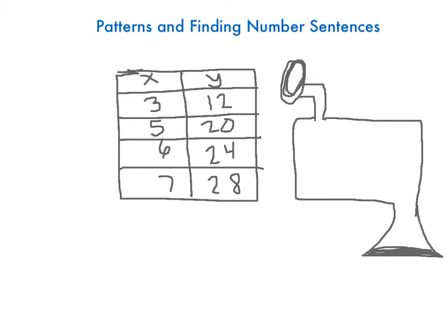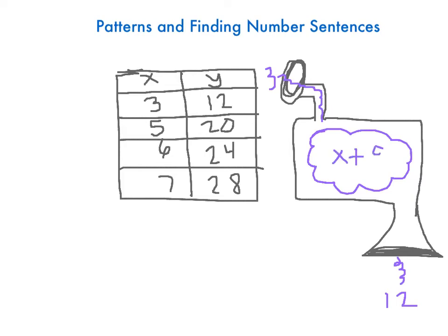So for instance, if I put a 3 in and it does something and spits out a 12. So we want to know what our something is. I could do 3 plus 9. True, but then you have to check it on the other numbers. Because if the machine's adding 9, then 5 plus 9 is 14, not 20 — so the machine is not adding 9. Is it subtracting anything? Probably not, because every time we're going up — it's getting greater.